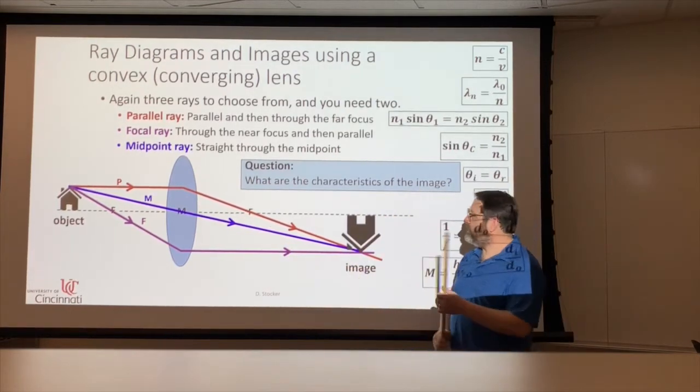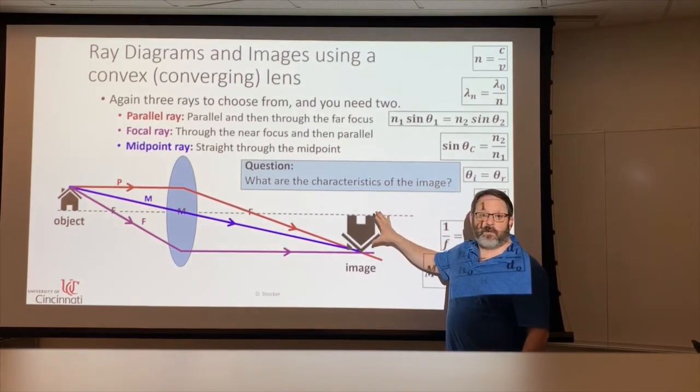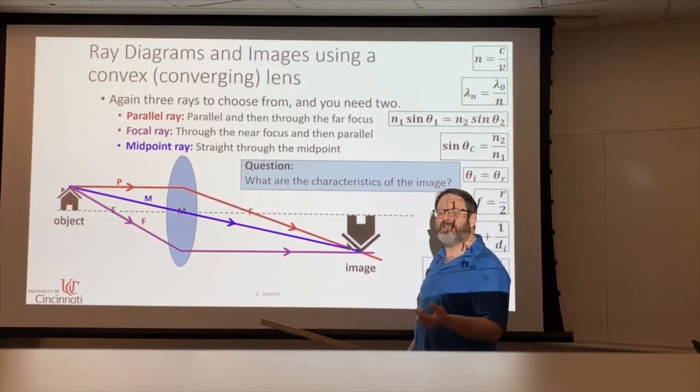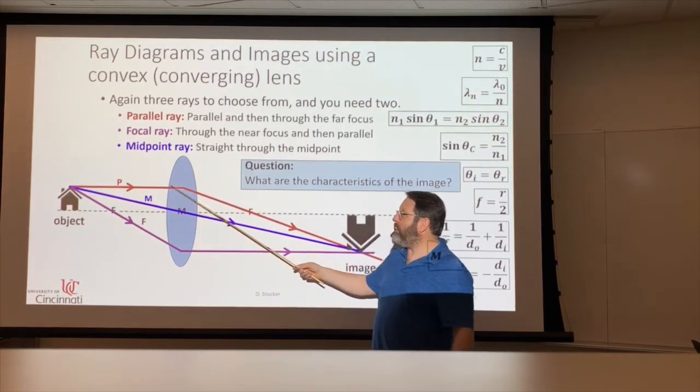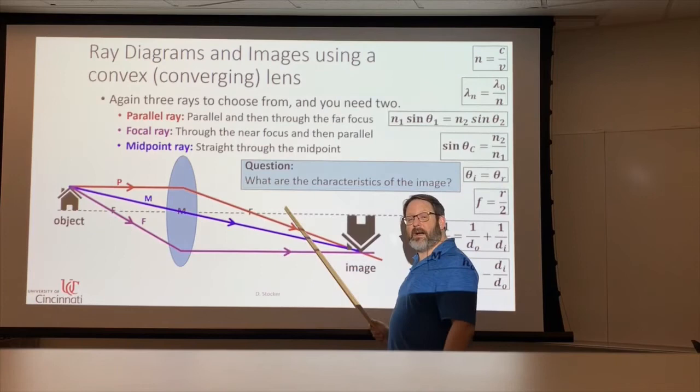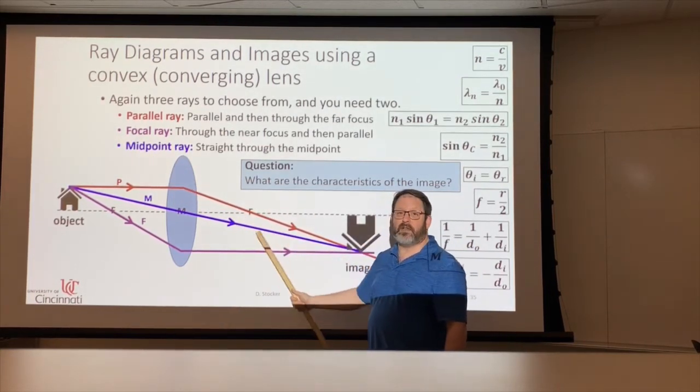So the characteristics of this image, same ideas with the mirror. We've got real or virtual, right? That's usually the hardest one: does the light really go to that place. Well, this time with the mirror, if the image was on the opposite side of the mirror, the real light reflected and went away. So these were virtual images.